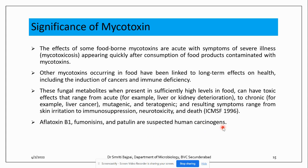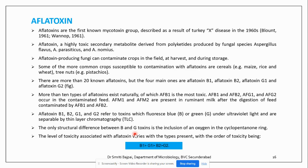The main important human carcinogens include aflatoxin B1, fumonisins and patulin. Aflatoxins were the first known mycotoxin group, described as a result of turkey X disease in 1960. Aflatoxin is a highly toxic secondary metabolite derived from a polyketide product produced by the fungal species Aspergillus flavus, Aspergillus parasiticus and Aspergillus nomius.